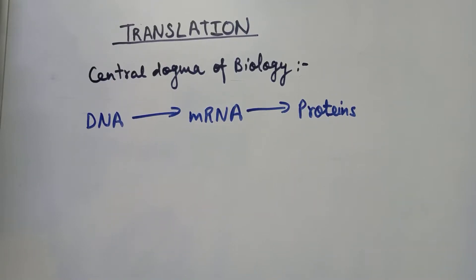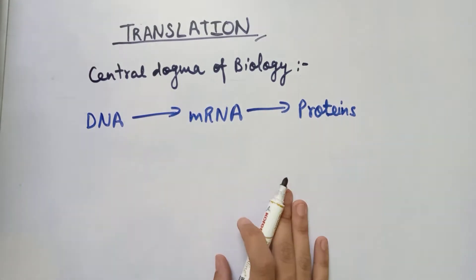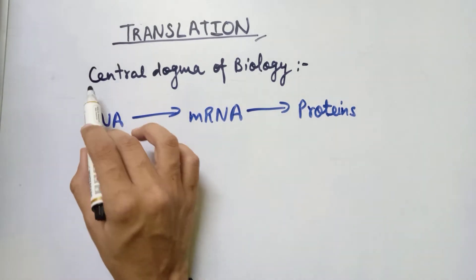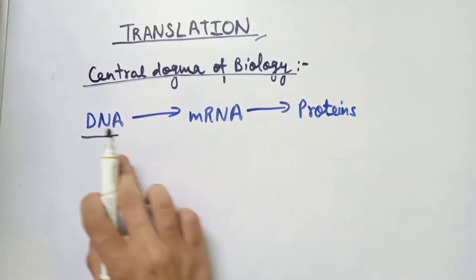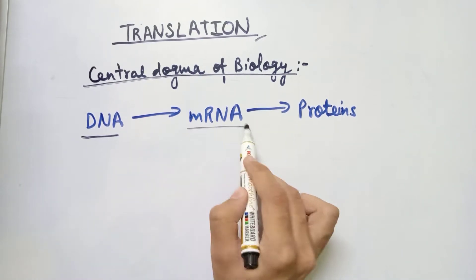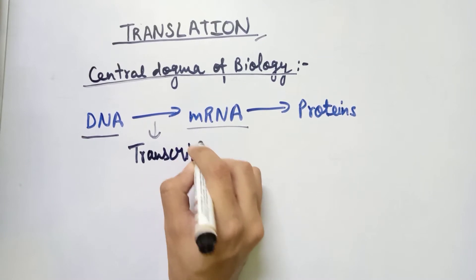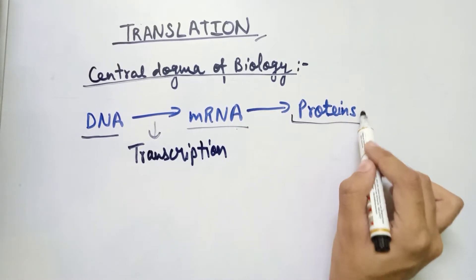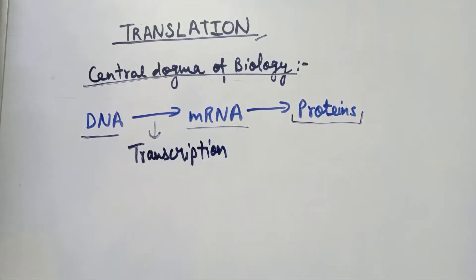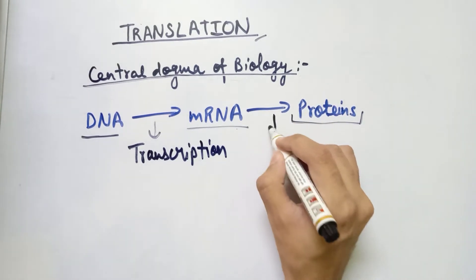Welcome back to the channel. Today we will study about the topic of translation. Before studying translation, we should know about the central dogma of molecular biology. The central dogma is a flow chart showing that DNA helps in making mRNA, which is messenger RNA — a process known as transcription. mRNA is then converted into proteins, which are the building blocks of every living organism, and this process is known as translation.